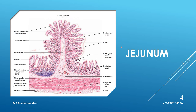Next we will see the slide of jejunum. Here also you have to see for all the four layers: mucosa, submucosa, muscularis externa, and serosa. In this slide you are able to make out plica circularis — the permanent mucosal fold present in the small intestine that increases the surface area.